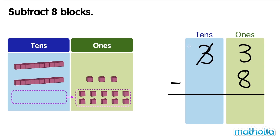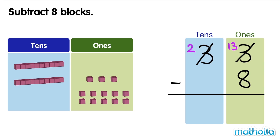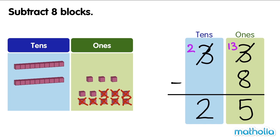Now we have two tens and thirteen ones. Now we can subtract the ones. Thirteen ones minus eight ones equals five ones. Next, subtract the tens. Two tens minus zero tens equals two tens. There are twenty-five blocks left. Thirty-three minus eight equals twenty-five.